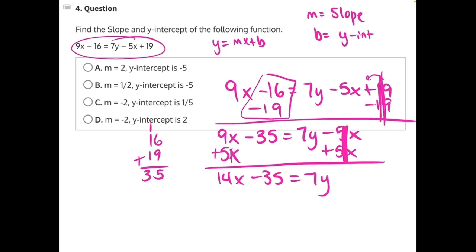Finally, 7 is being multiplied to y, so we need to do the opposite and divide everything by 7. These 7s will cancel, leaving us with 14 divided by 7 is 2x, and 35 divided by 7 is 5 equals y. We could also move this y over here. It won't change anything, but it'll make it look more like our slope-intercept form.